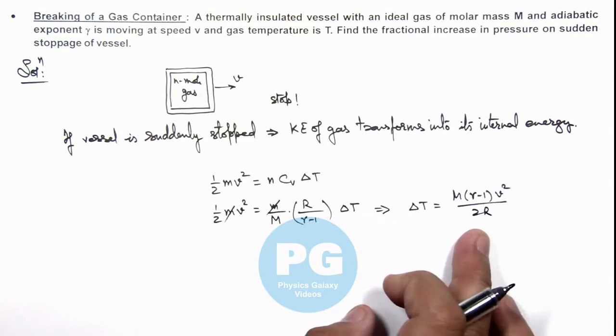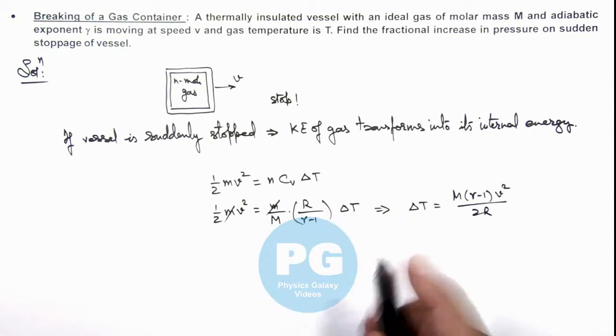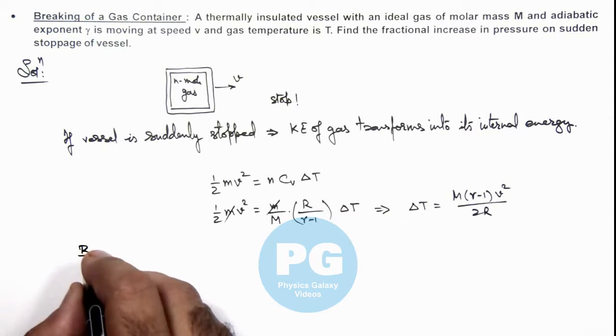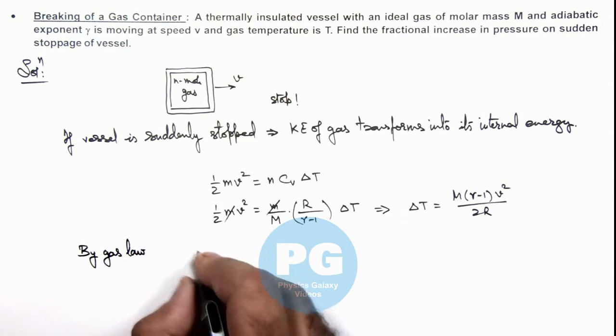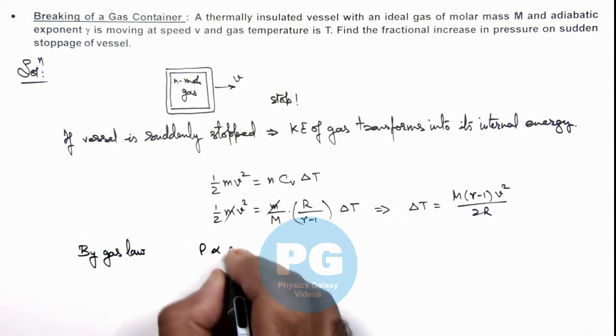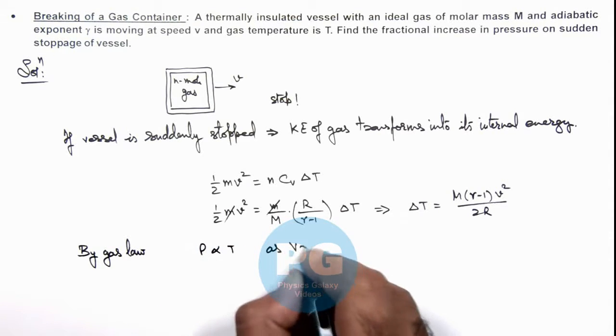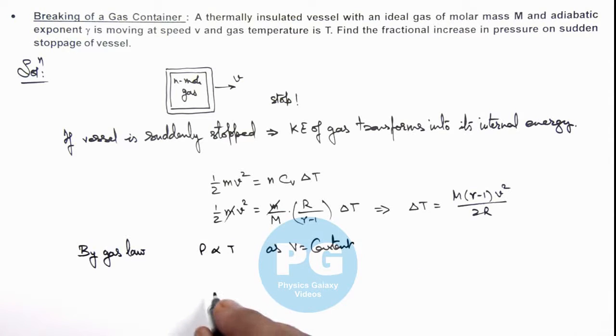So as we have got the rise in temperature, we can calculate the fractional increase in pressure. We can directly write by gas law: pressure is directly proportional to T as volume is constant here. So we can directly write delta P by P is equal to delta T by T.